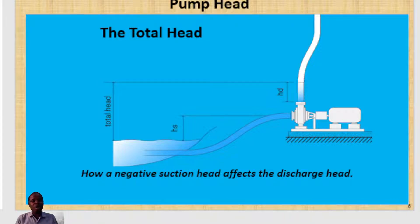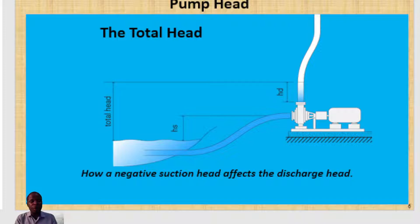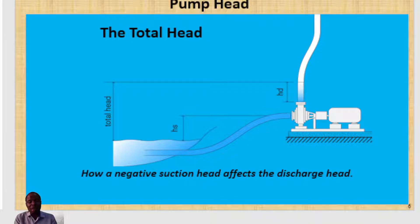We also have another concept, which is a negative suction head system, where you have your pump suction tank below the pump centerline. Imagine you are drawing liquid from a tank where the level of the liquid is below the pump centerline — referred to as negative suction head. The pump will still produce the same total head, but the discharge head at the discharge line, referred to as HD, will definitely go down.